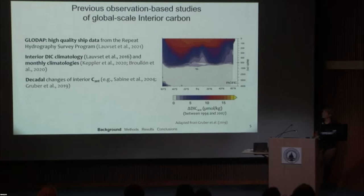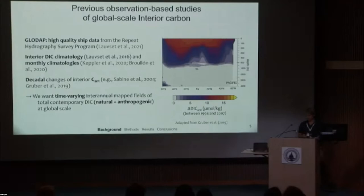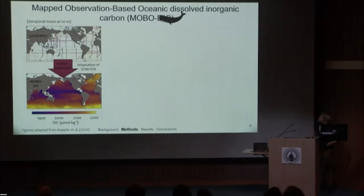What we wanted to do was see the increase in the total DIC — both natural and anthropogenic combined — at a global scale. We wanted time-varying interannual mapped fields of total DIC. So we created mapped observation-based fields of oceanic dissolved inorganic carbon — MOBA-DIC. We used the GLODAP data and adapted a cluster regression approach based on the SOM-FFN method — one of the machine learning approaches Gayle mentioned that were developed for the surface — and adapted it for the interior ocean. This is a big step up from past methods that could only constrain the anthropogenic component.